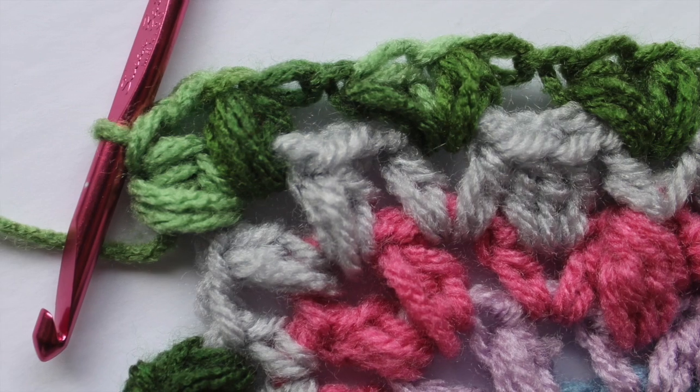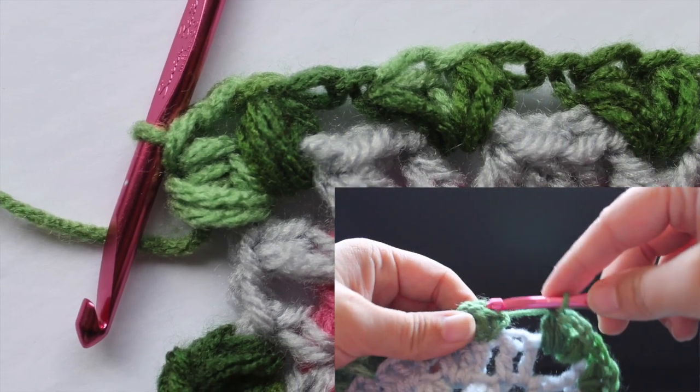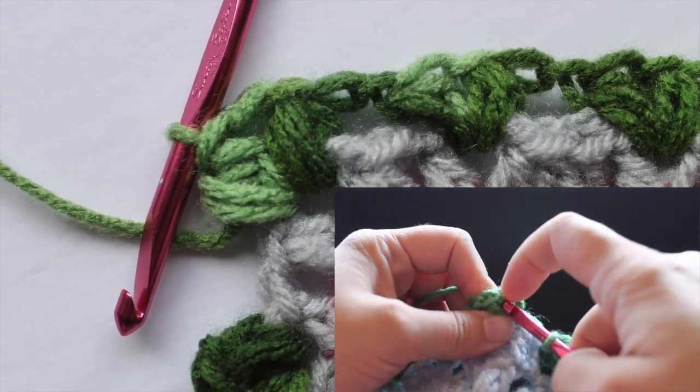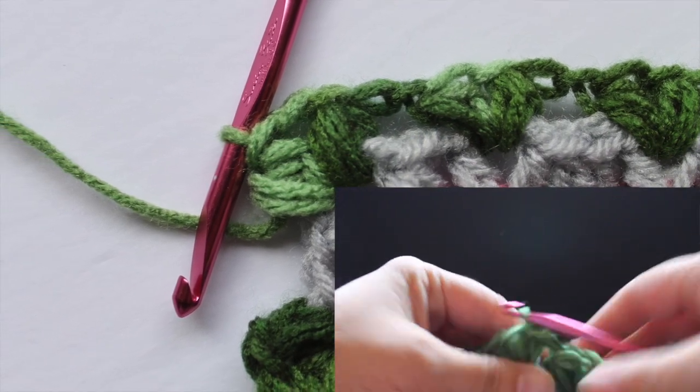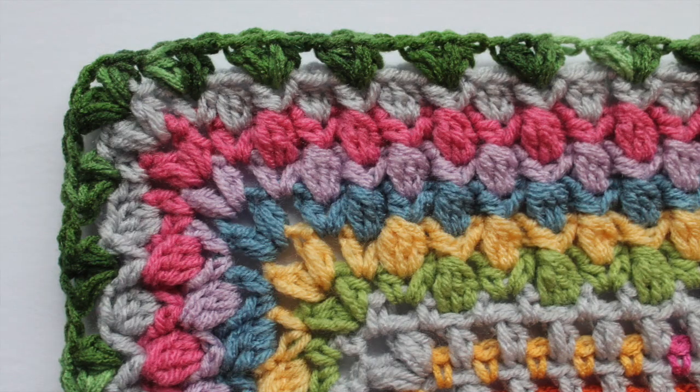Here we are at the end of the round. To finish off, join with a slip stitch to your beginning puff. That completes this round of work. You can fasten off your green tones. That brings us to the end of Part 12.